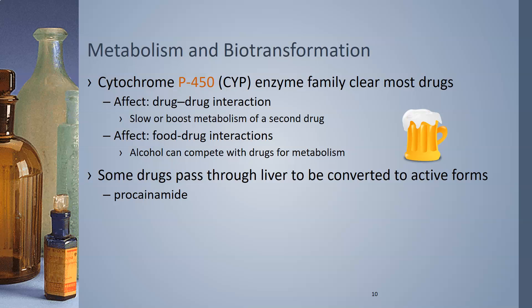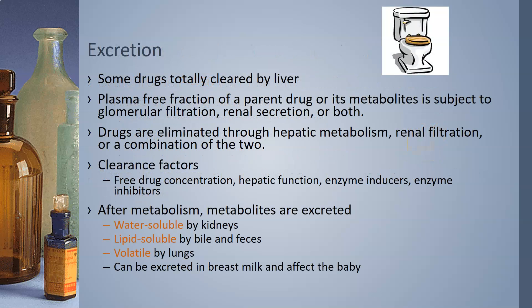Some drugs require the liver to convert them into active forms — for example, procainamide. Regarding excretion, some drugs are totally cleared by the liver. The plasma free fraction of the parent drug or its metabolites is also subject to glomerular filtration in the kidneys, renal secretion, or both. Some drugs may be too large for glomerular filtration and undergo renal secretion instead. Drugs are eliminated through hepatic metabolism, renal filtration, or a combination of the two. Clearance factors affecting excretion include the free drug concentration, hepatic function, and enzyme inducers and inhibitors.